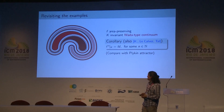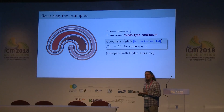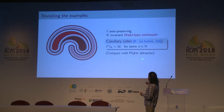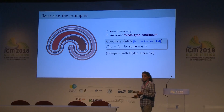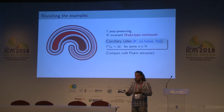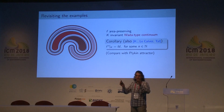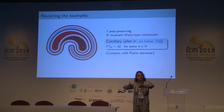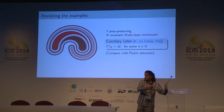Similarly, for the WADA-type continua, if it's invariant by an area-preserving homeomorphism, then there is a power of the homeomorphism which leaves it fixed point-wise — the dynamics is the identity. In contrast, when you look at the Plykin attractor, which is exactly the boundary of these disks, the dissipative dynamics is very rich: positive entropy, many periodic points, et cetera. But if you take an area-preserving homeomorphism preserving the set, it has to be essentially the identity up to a power. This shows a sharp contrast between what can happen in the area-preserving versus the dissipative setting.